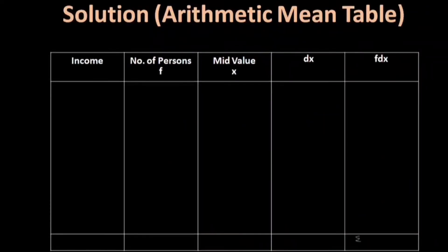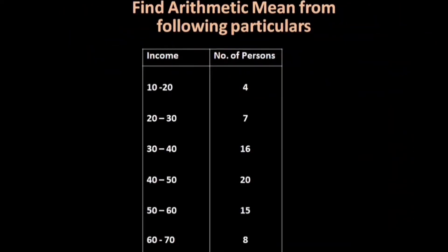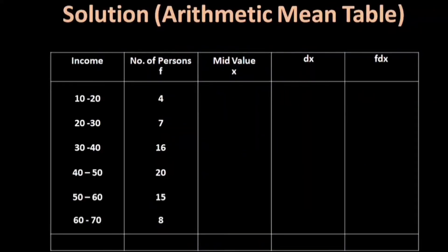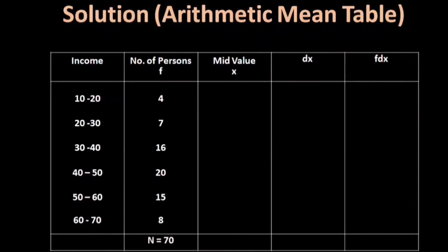We set up columns for number of persons, mid value, X, and DX. The total frequency n is equal to 4 plus 7 plus 16 plus 20 plus 15 plus 8, so n is equal to 70.